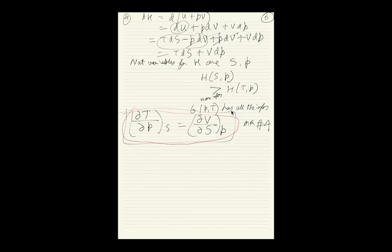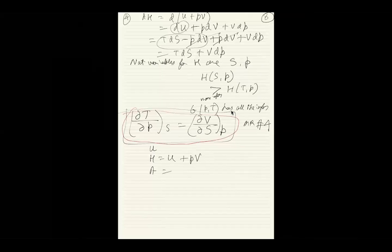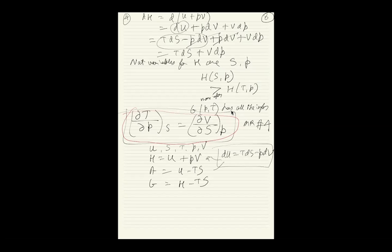A recap: we have U, H = U + PV, A = U - TS, and G = H - TS — these are the four state functions. And S, T, P, V are also state functions. dU = TdS - PdV is the most fundamental equation including first and second law. Once you have this, plug it into the definitions of H, A, and G to get all four Maxwell relations. You don't need any other information whatsoever.